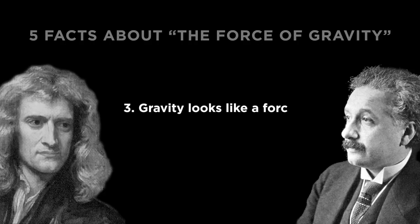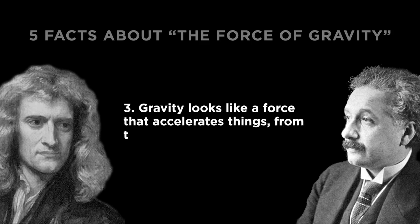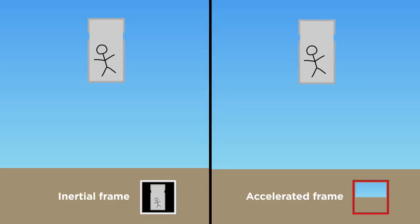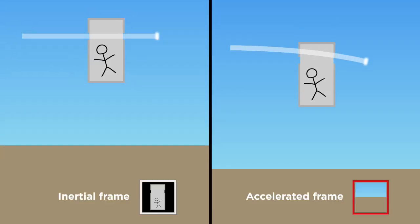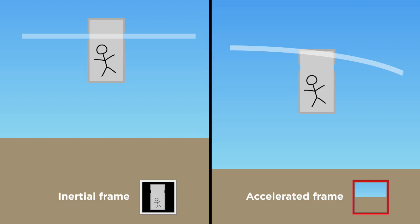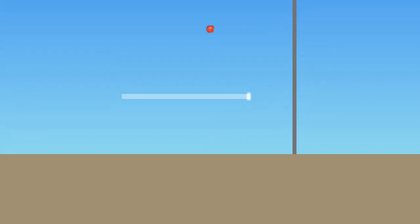Number three: gravity looks like a force that accelerates things from the perspective of the ground, but modern physics defines this as an accelerated reference frame. The laws of physics are written down as they operate in inertial reference frames, because that's where the laws take their simplest forms. Only in inertial reference frames does a nearby beam of light travel in a straight line, for example. And in that context, no force makes an apple fall to the ground. Now this is an important one — it isn't just a matter of perspective, because one perspective is objectively superior to the other one.